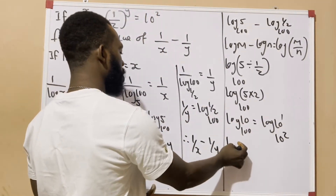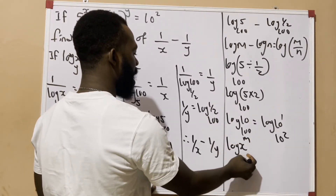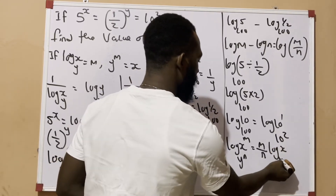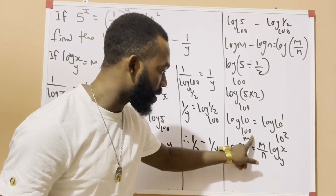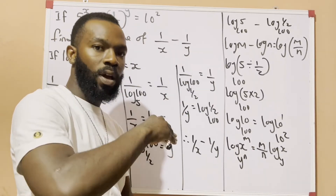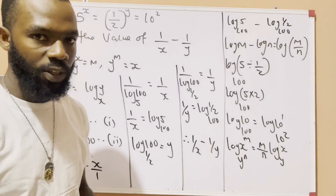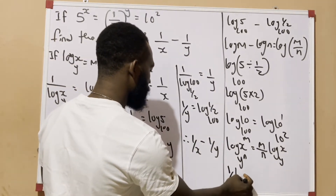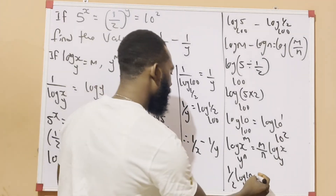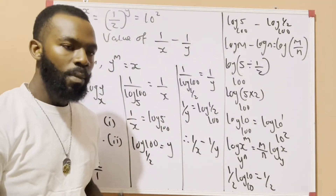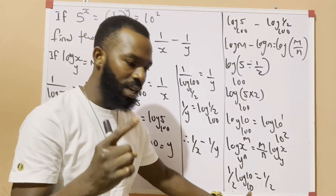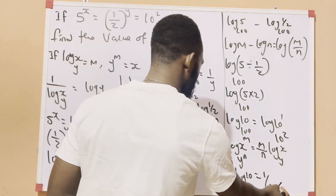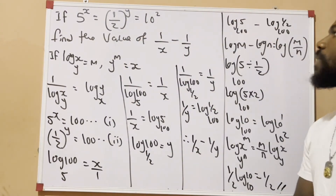Now I apply the rule: log x raised to the power m, base y raised to the power n, equals m over n times log x base y. When both the number and the base carry powers, the powers come to the front as a fraction m over n. So here we get 1 over 2 times log 10 base 10. The law of logarithms says log of a number to the same base equals 1, so log 10 base 10 is 1. Therefore our answer is 1 over 2.